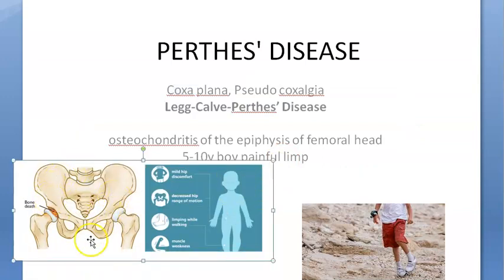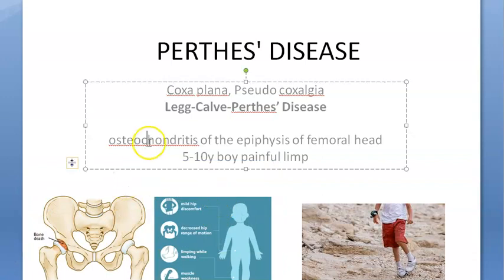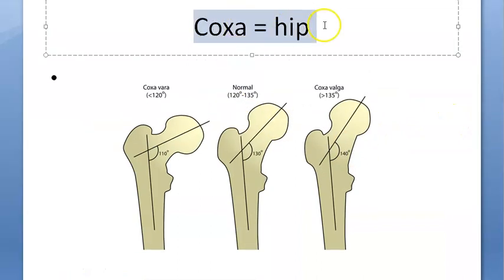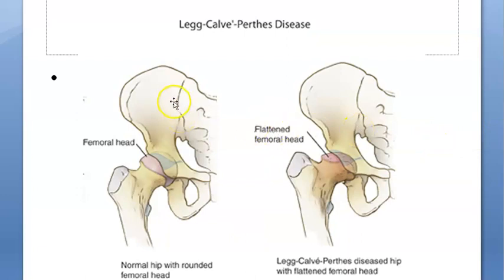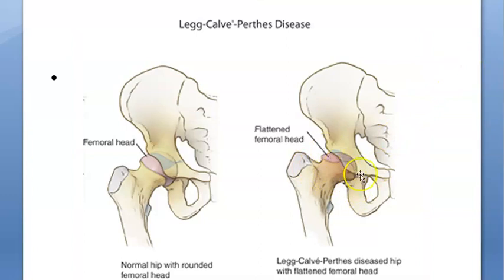What is coxa? Coxa means hip — the hip joint where your femoral head sits inside your acetabulum. And plana means plane, flat. So the femoral head has become flat. That is coxa plana — the hip where the femoral head has become flat.